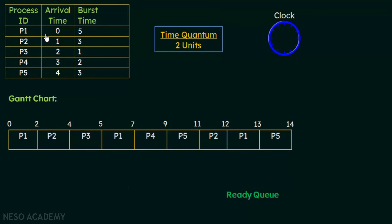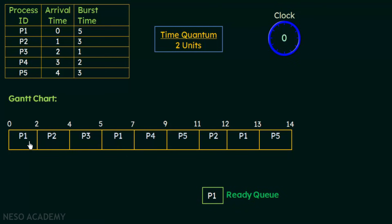Starting at time 0, process P1 arrives. P1 is the first process and since there are no other processes, it is immediately given the CPU. P1 is removed from the ready queue and begins its execution in the Gantt chart.